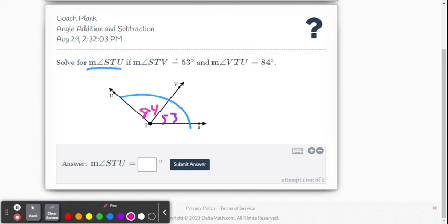Again, we're going to use the angle addition postulate. We know the two parts, the two angles equal the large angle, so we're just going to add them up. 53 plus 84, and that gets us 137 degrees.